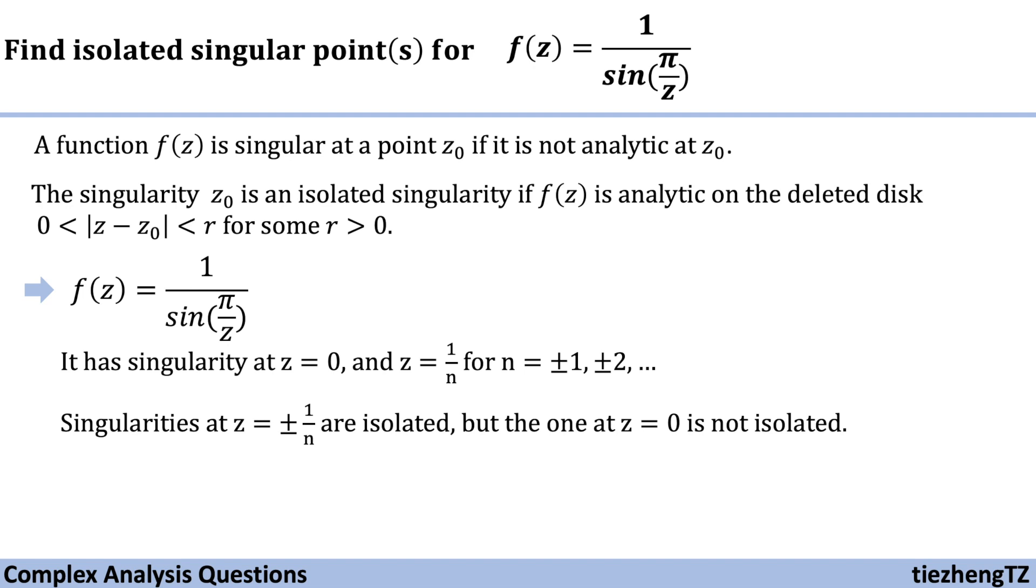This is because when z is 0, we cannot find the corresponding deleted disk where |z| is between 0 and r to make the function f(z) analytic, which means every neighborhood of 0 contains zeros at 1/n for larger n values.